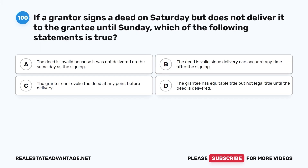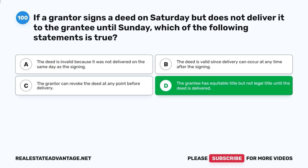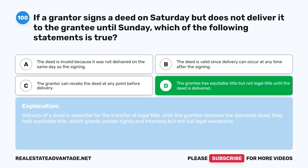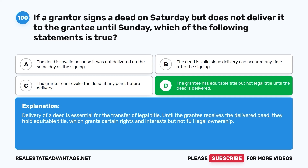Question 100: If a grantor signs a deed on Saturday but does not deliver it to the grantee until Sunday, which of the following statements is true? A. The deed is invalid because it was not delivered on the same day as the signing. B. The deed is valid since delivery can occur at any time after the signing. C. The grantor can revoke the deed at any point before delivery. D. The grantee has equitable title but not legal title until the deed is delivered. The correct answer is D. Delivery of a deed is essential for the transfer of legal title. Until the grantee receives the delivered deed, they hold equitable title, which grants certain rights and interests but not full legal ownership. Don't forget to share this video with your friends and subscribe for more practice tests.